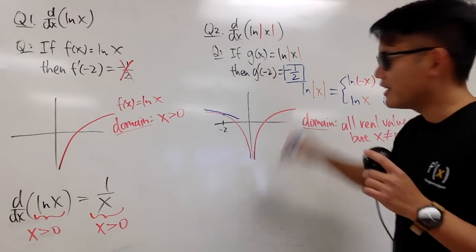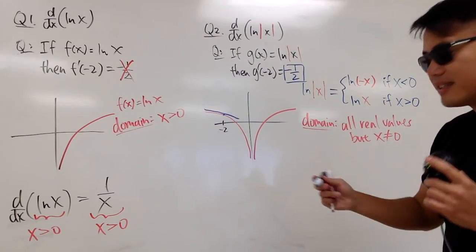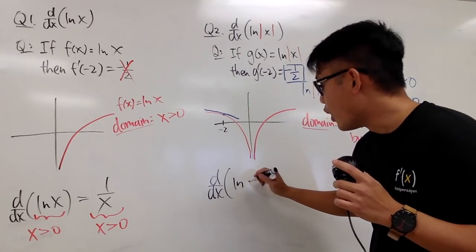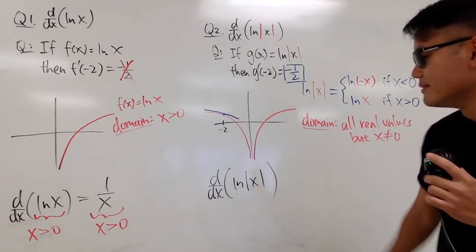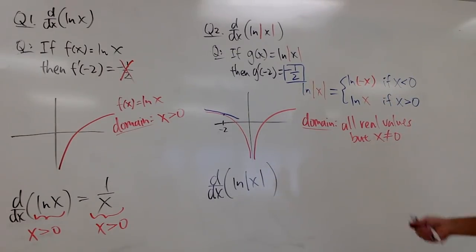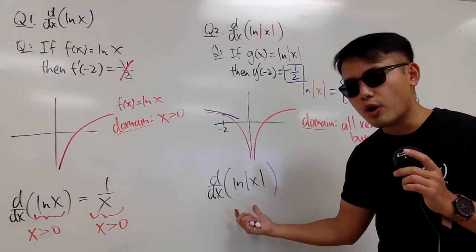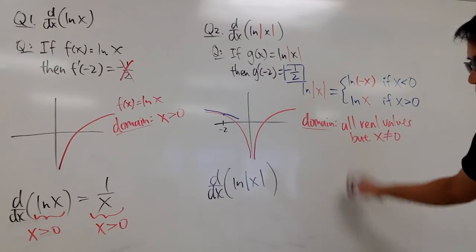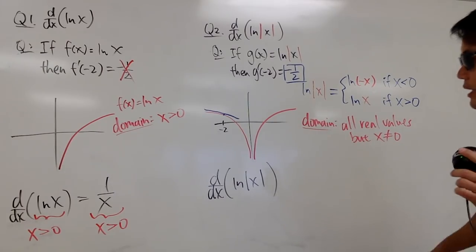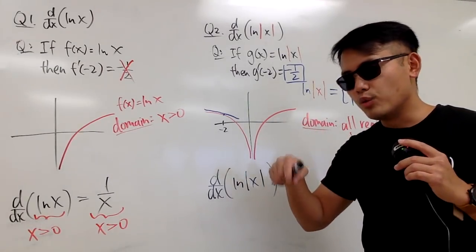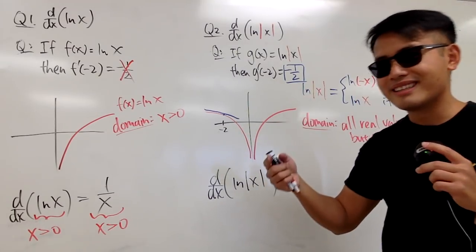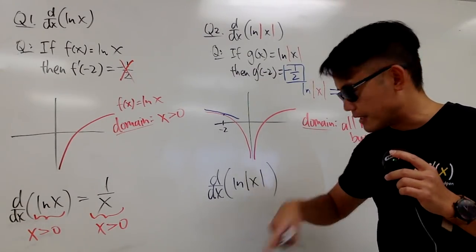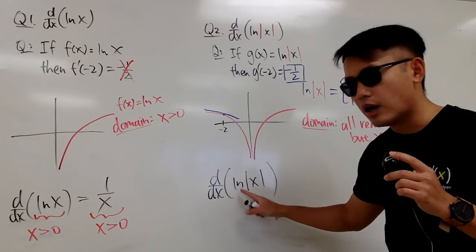So negative 1 half is indeed the answer here. Now let me show you how to take the derivative of ln of absolute value of x. Keep in mind the domain. This time the domain of the original and the domain of the derivative are actually the same — we don't lose any numbers. Only when you have a pointy thing, a non-differentiable point, or vertical tangent line situation, you may have a smaller domain for the derivative.